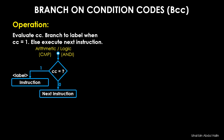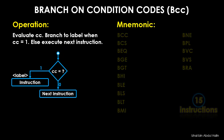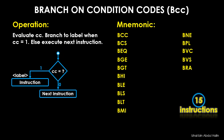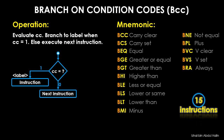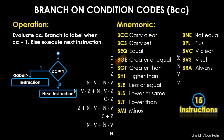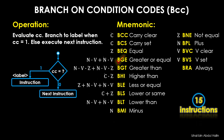There are 15 instructions in the BCC group. Notice that all of the instructions start with the letter B, which stands for branch. The preceding letters tell us the name of what the instruction does. For example, BGE stands for Branch Greater or Equal. The microprocessor knows whether to branch or not by observing the condition codes, which are actually boolean expressions. The terms in the expressions come from the condition code register's flags.